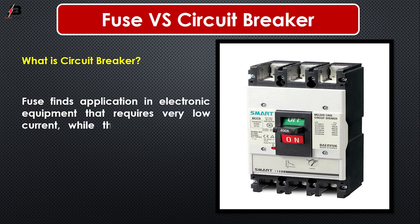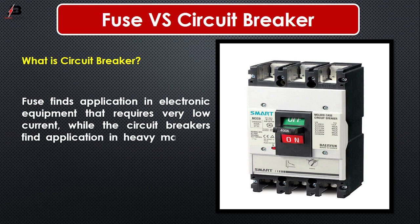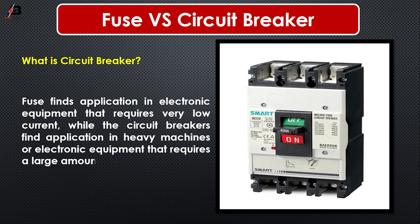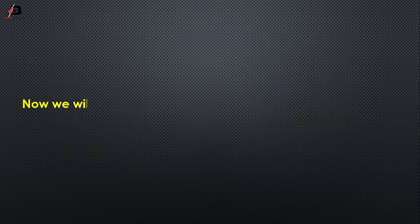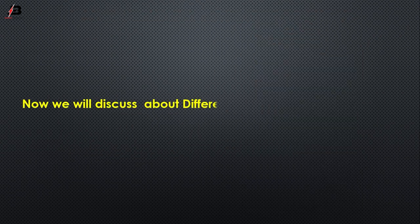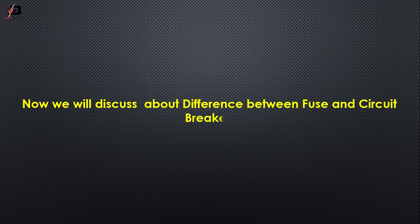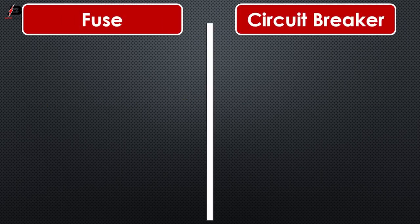A fuse finds application in electronic equipment that requires very low current, while circuit breakers find application in heavy machines or electrical equipment that requires a large amount of current. Now we will discuss the differences between fuse and circuit breakers.